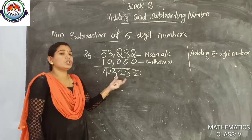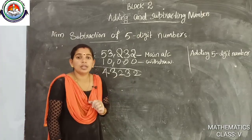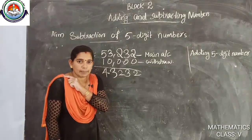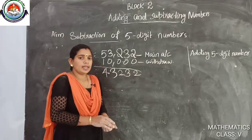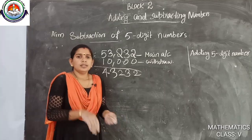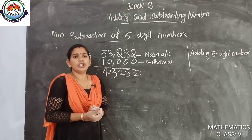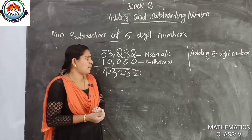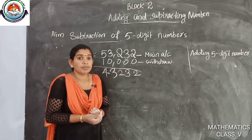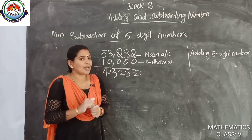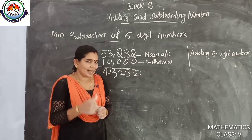After taking 10,000 from 53,232, my balance is 43,232 rupees. Now we will check it — how we do the subtraction without the abacus.